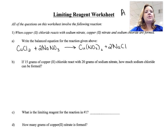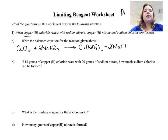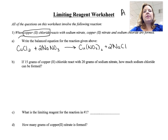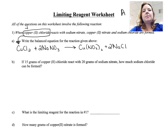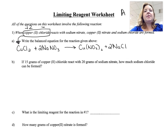The first thing you're going to need to do with any of these is to balance the reaction. So if you're given copper 2 chloride, you have to write the formulas correctly — CuCl₂. Copper 2 means it has a plus 2 charge; chlorine has a negative 1 charge, so you need 2 chlorines in order to balance with the copper.